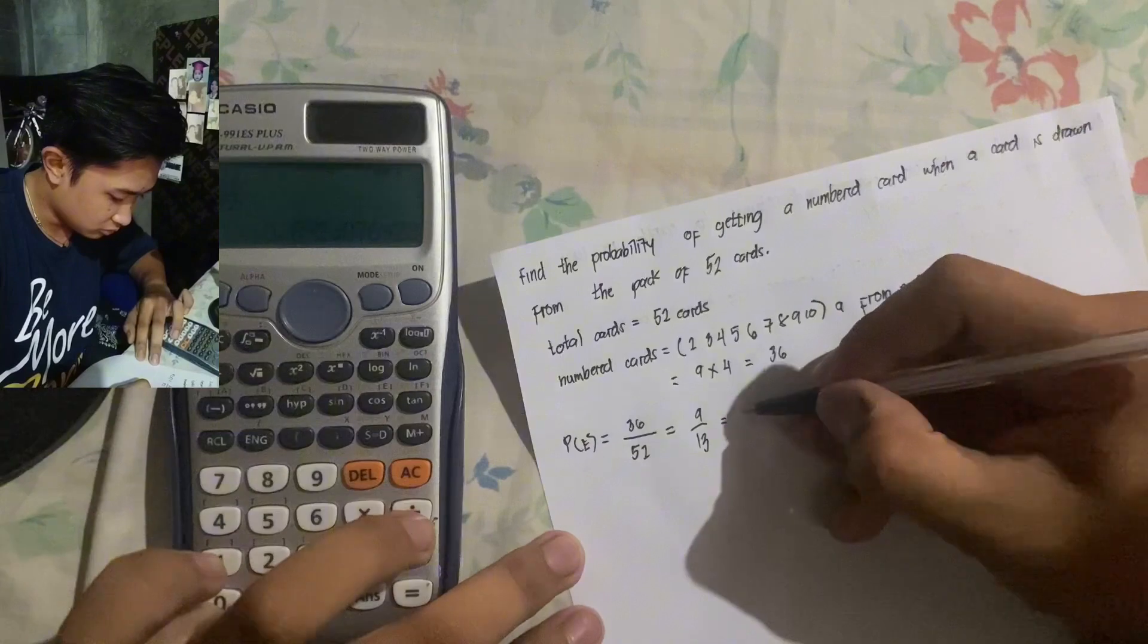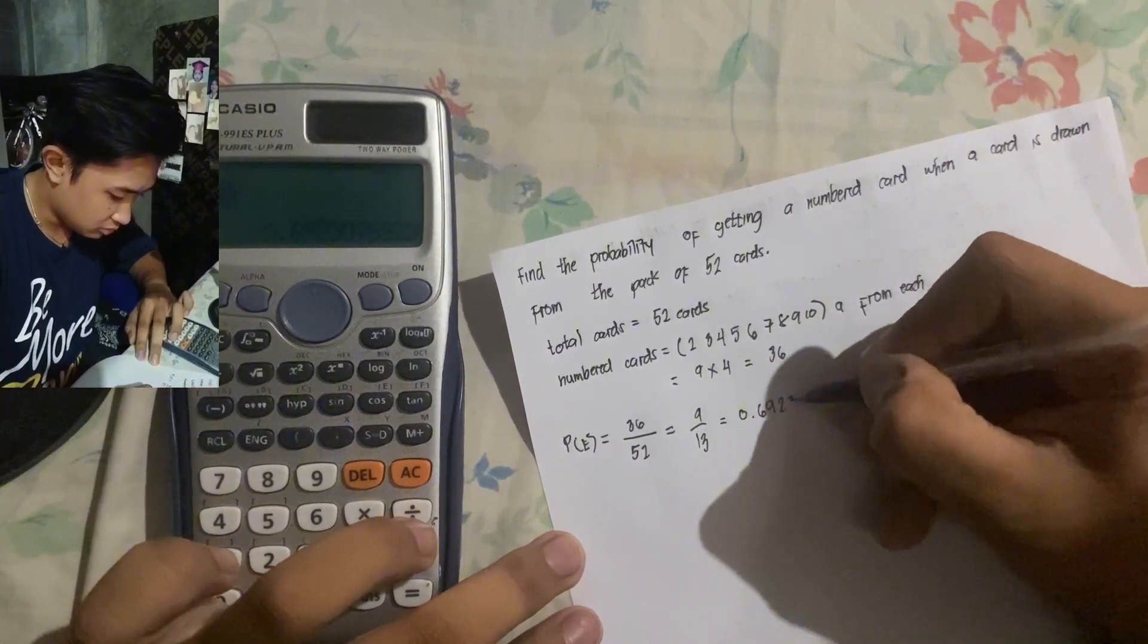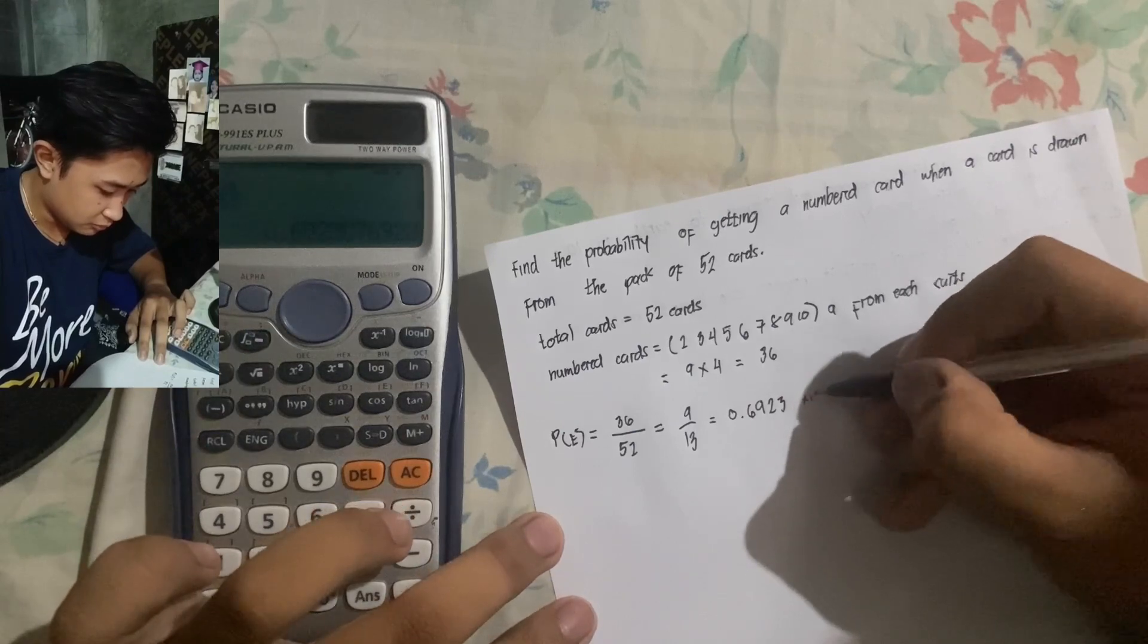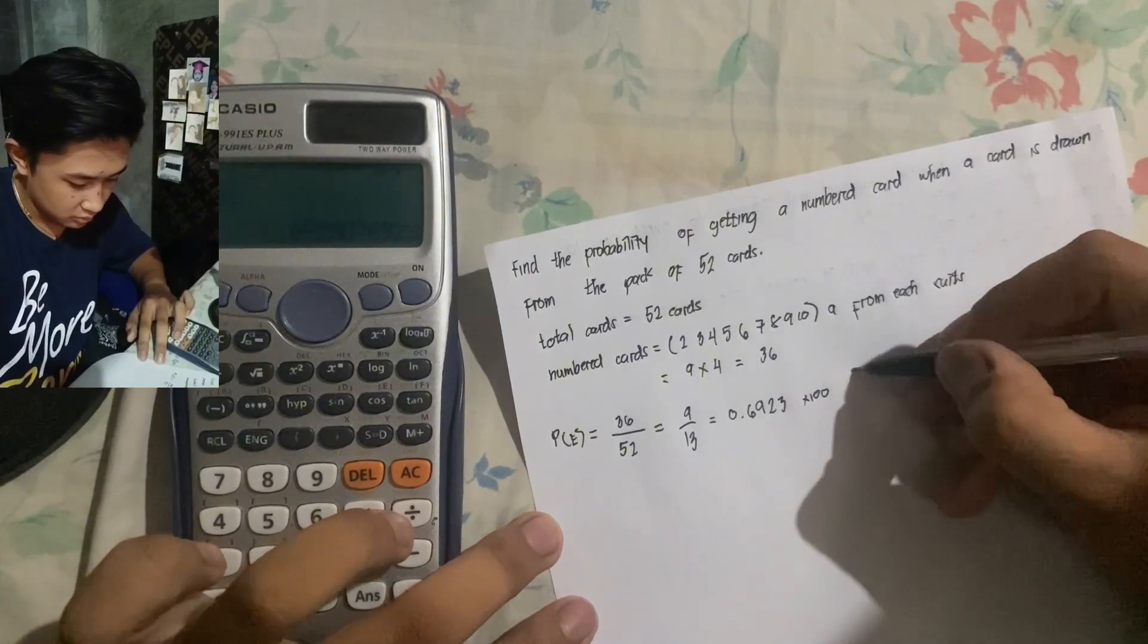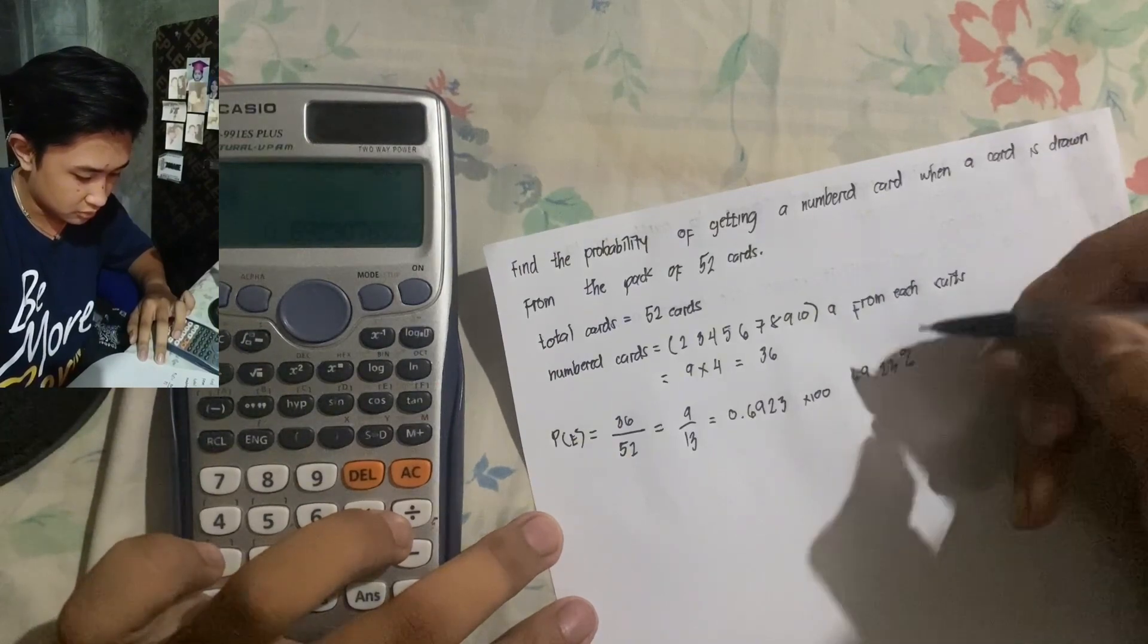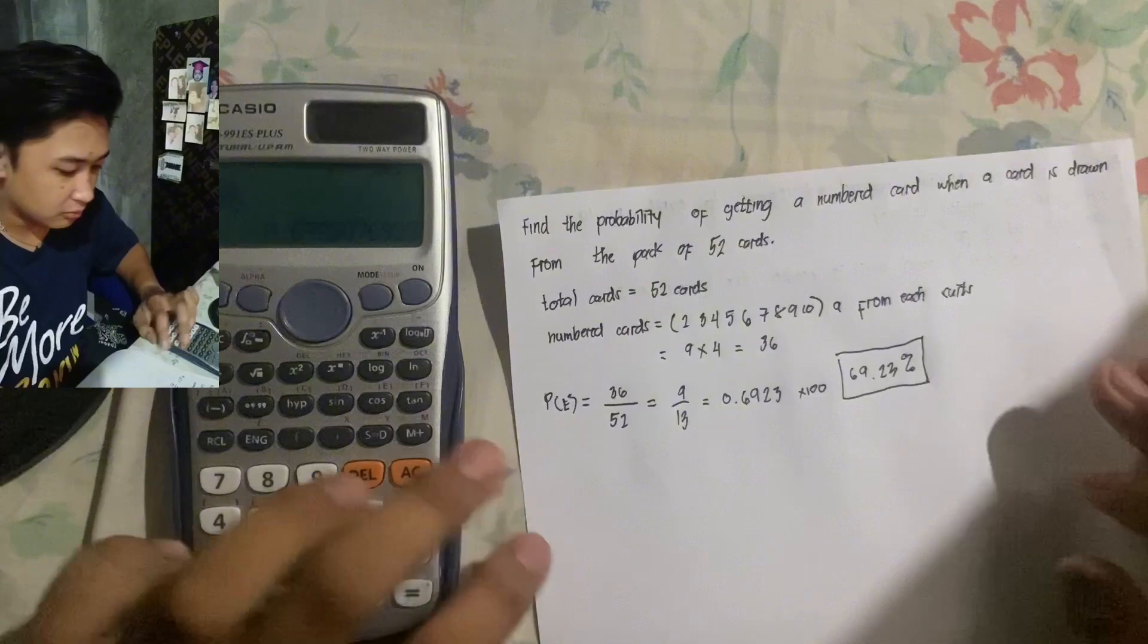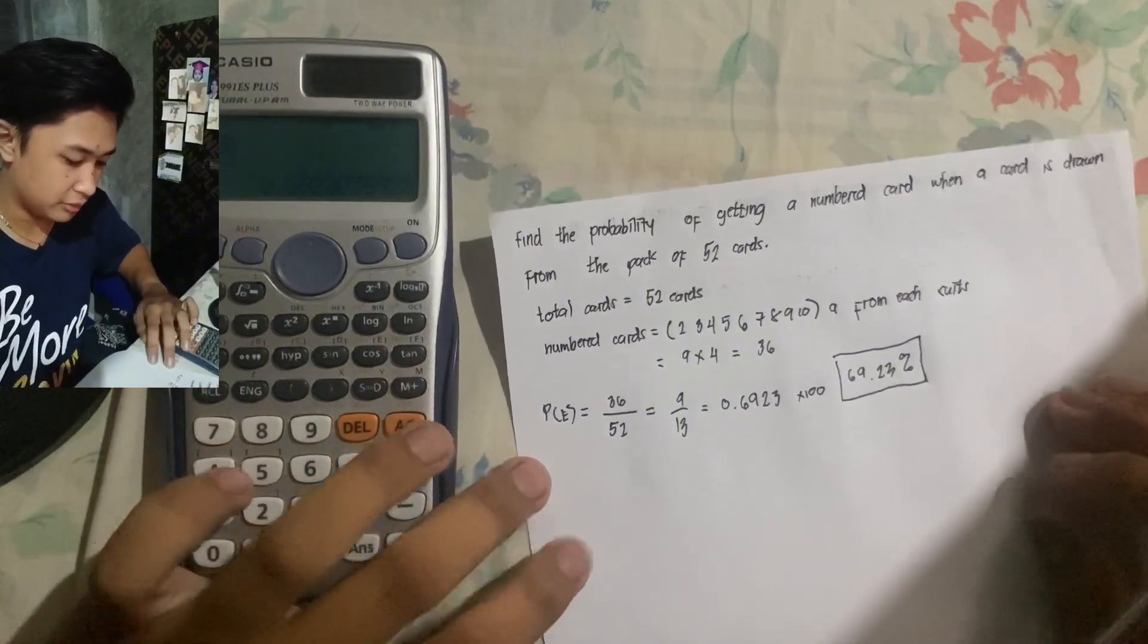It's equal to 0.6923. Times 100, that's 69.23%. The probability of getting a numbered card. Until next time.